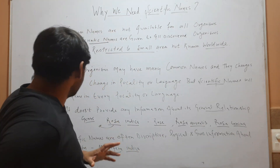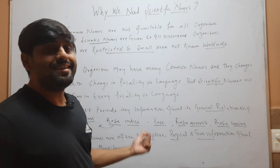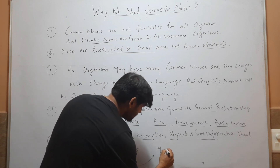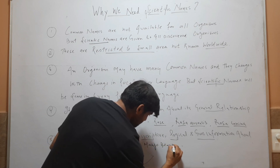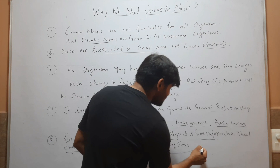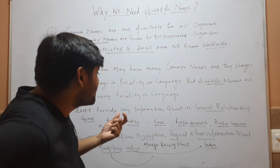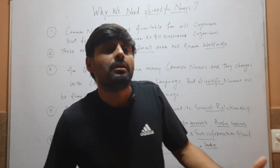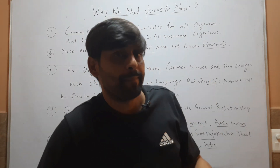The last reason is that scientific names are often descriptive, logical, and give information about the organism. For example, Mangifera indica: 'mangifera' is a Latin word meaning 'mango-bearing plant' — a plant that bears mango fruit. 'Indica' means it is native to India. So you can see it has a meaning, it is logical, and it gives information. It is descriptive — any plant that bears mango fruit and is native to India is called Mangifera indica. But most common names are given randomly and don't have any meaning.